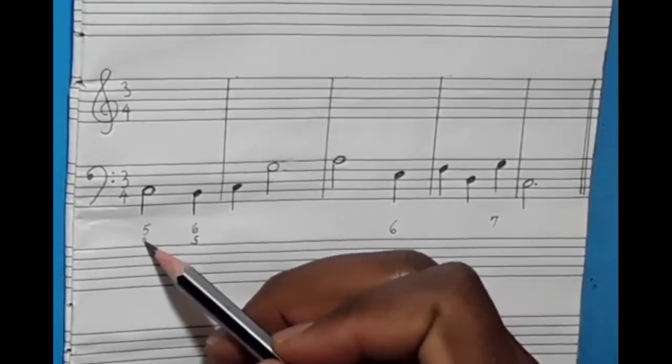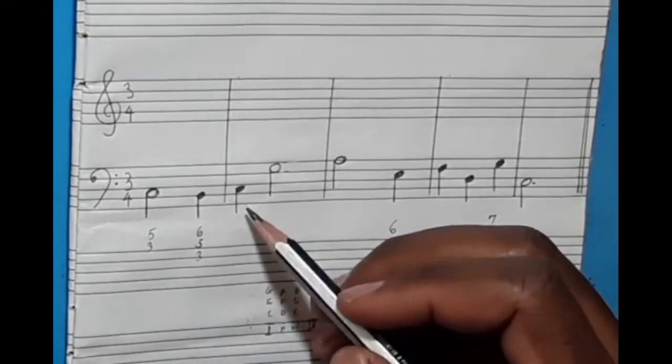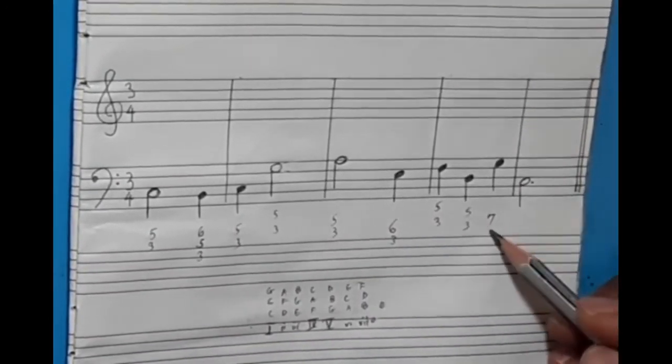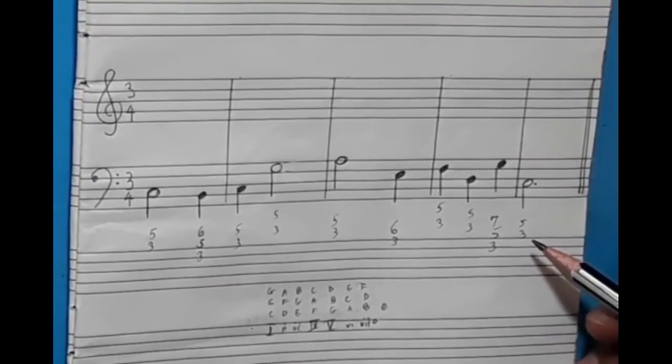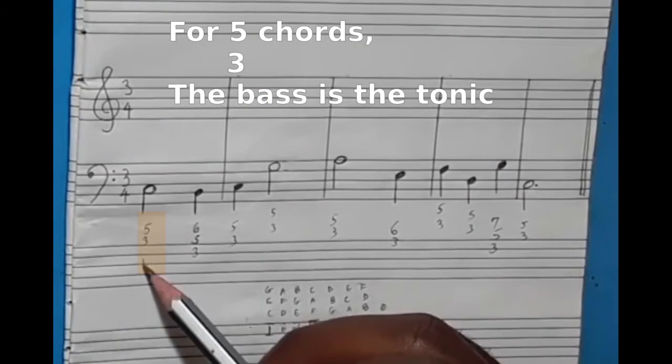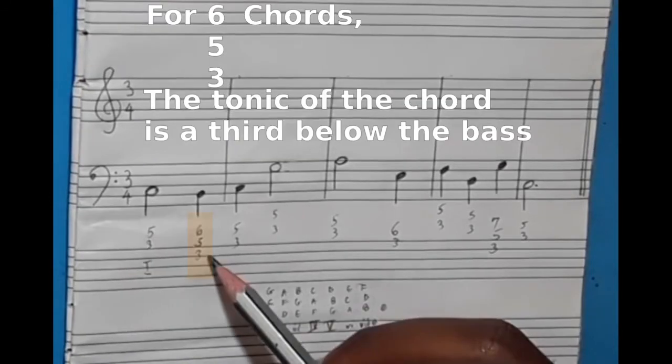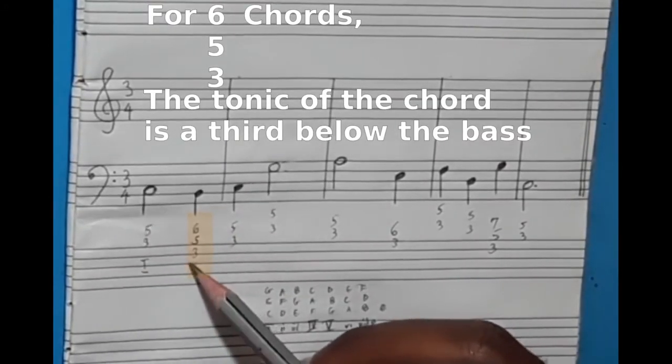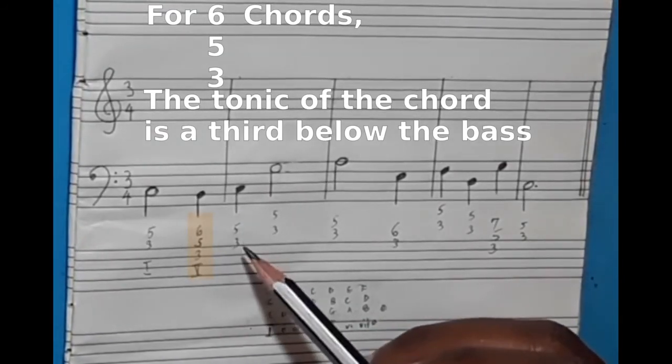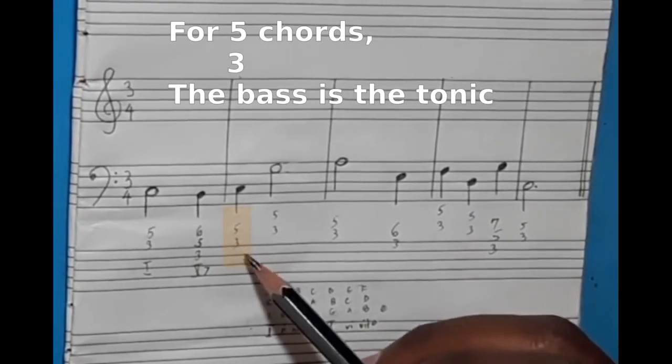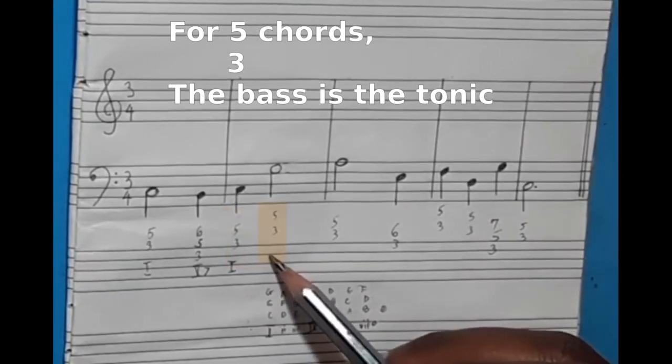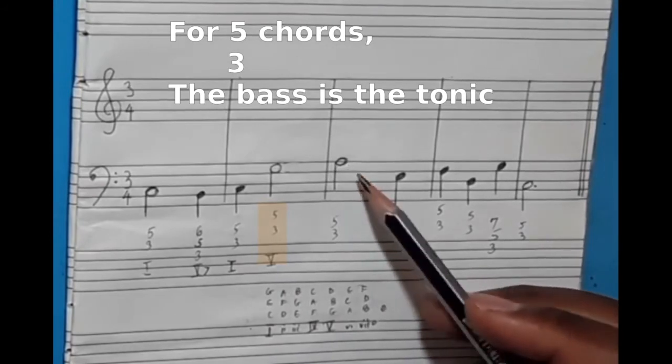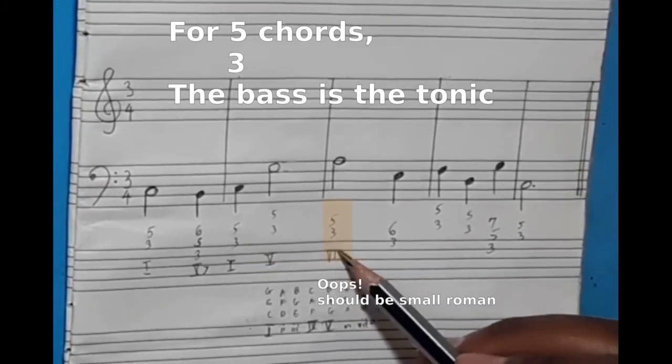I then will write down the figures in full so that I don't have to do a lot of calculations while realizing. Starting from the first bass note, I'll write the chord number below each of them. Five-three is root position, so the bass note is the tonic of the chord. So this is C, chord one. Six-five-three is a first inversion of a seventh chord, so the tonic is a third below the bass. This is G seventh, chord five seventh. Back to C root position. Root position again, this is G major chord, chord five. Root position again, A minor, this is chord six.